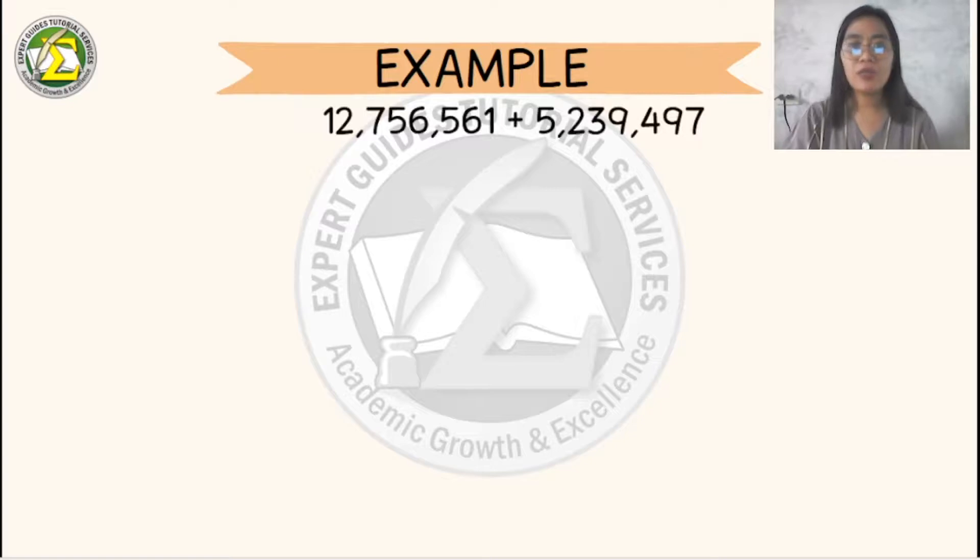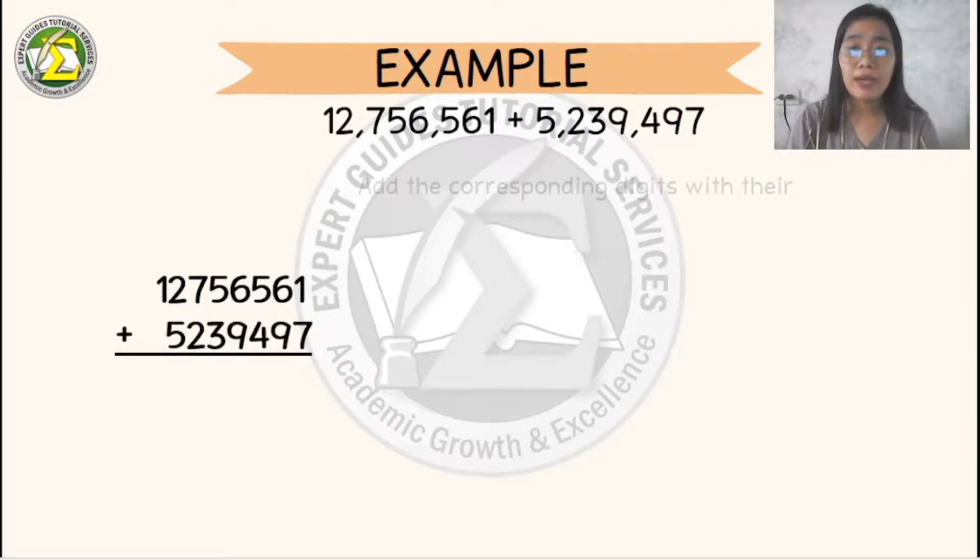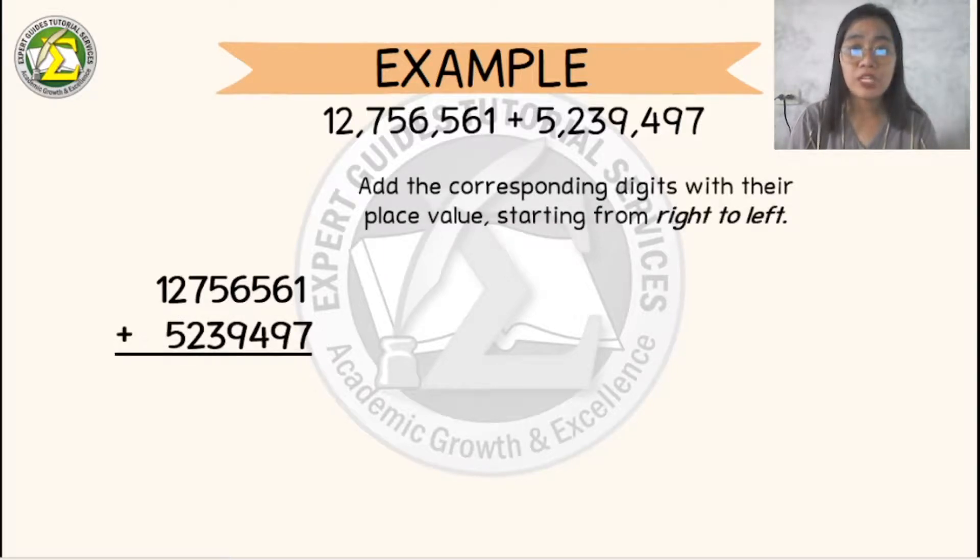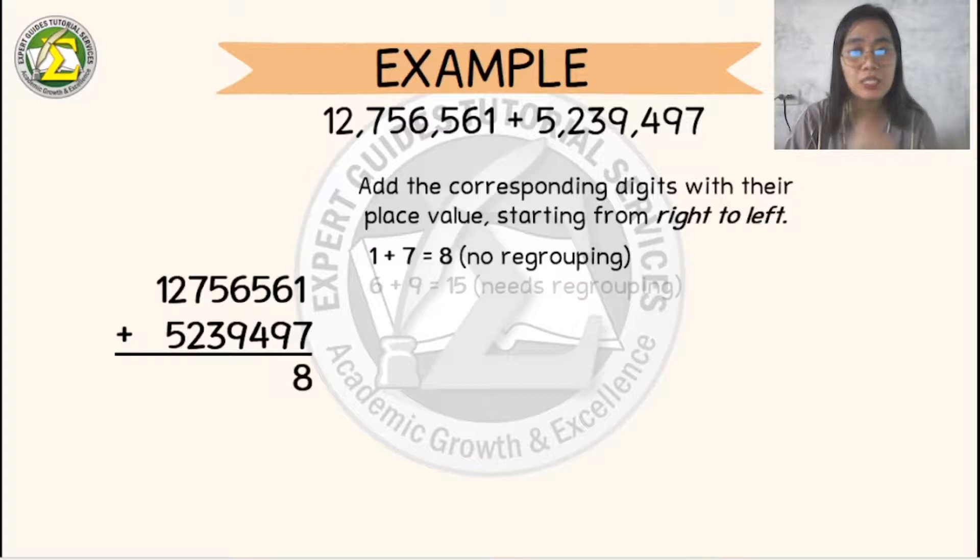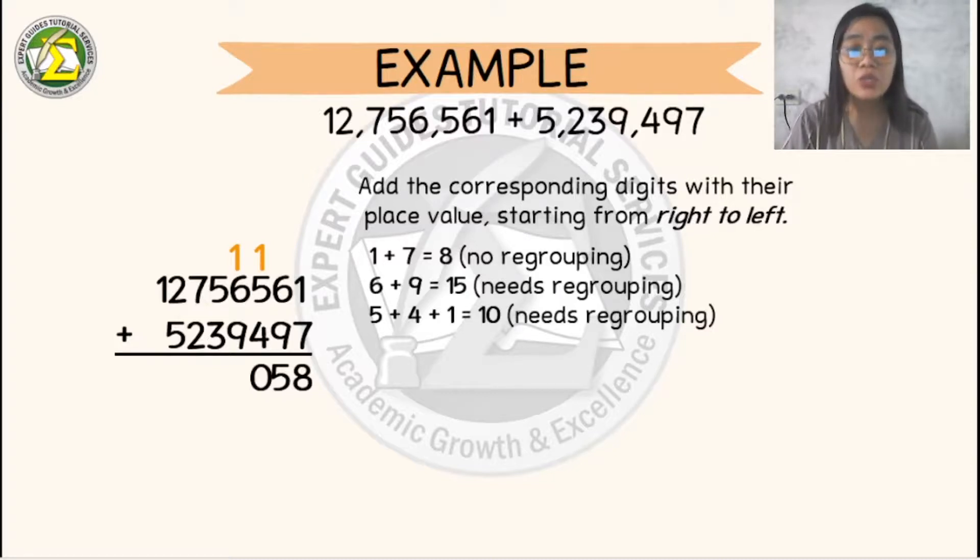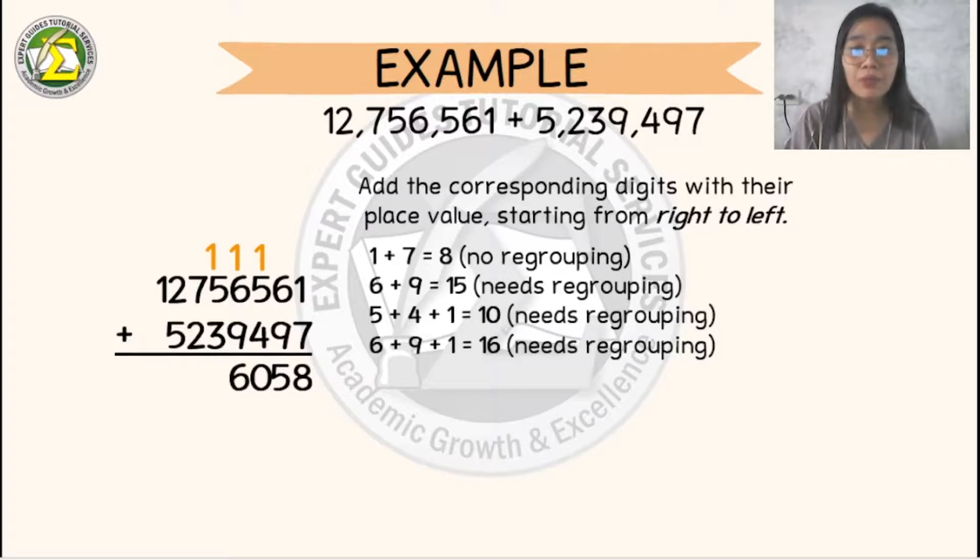So let's take another example. If we have 12,756,561 plus 5,239,497. So again, let's add the corresponding digits with their place values starting from right to left. We have 1 plus 7 is 8, 6 plus 9 is 15, 5 plus 4 will become 9 plus 1 is 10. So let's regroup. 6 plus 9 is 15. Don't forget to add 1 to the result.